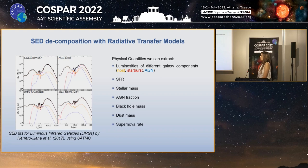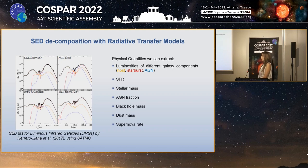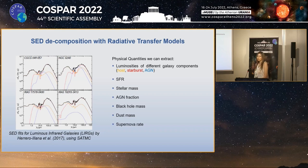Here we have an example of SED decomposition with radiative transfer models for luminous infrared galaxies by Herrero-Illana et al., using SATMC. We can derive luminosities of different galaxy components — host, starburst, and AGN — as well as the star formation rate, the stellar mass, the AGN fraction, the black hole mass, the dust mass, the supernova rate, and other physical quantities, which are all essential for studying galaxy evolution.